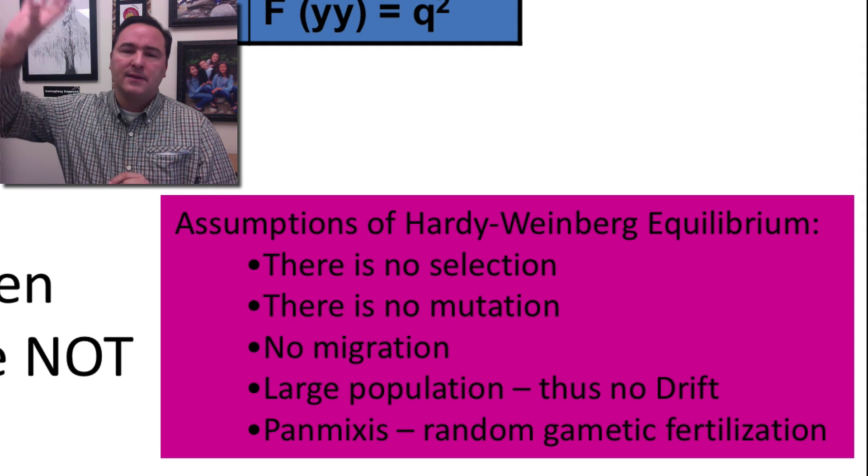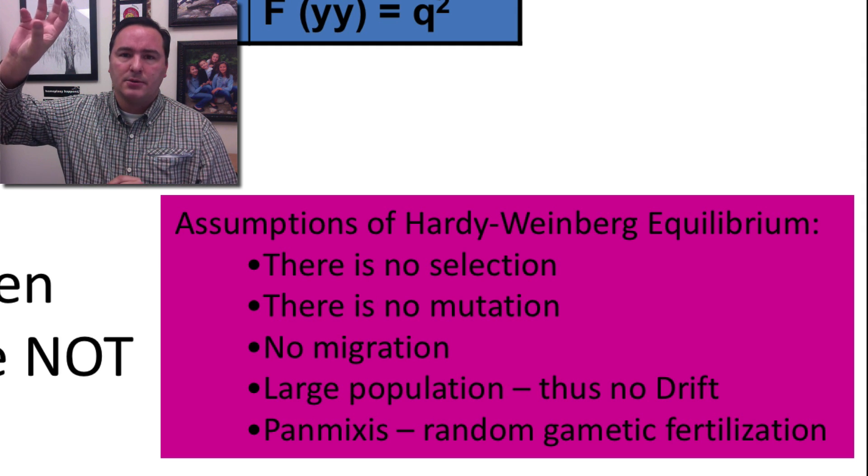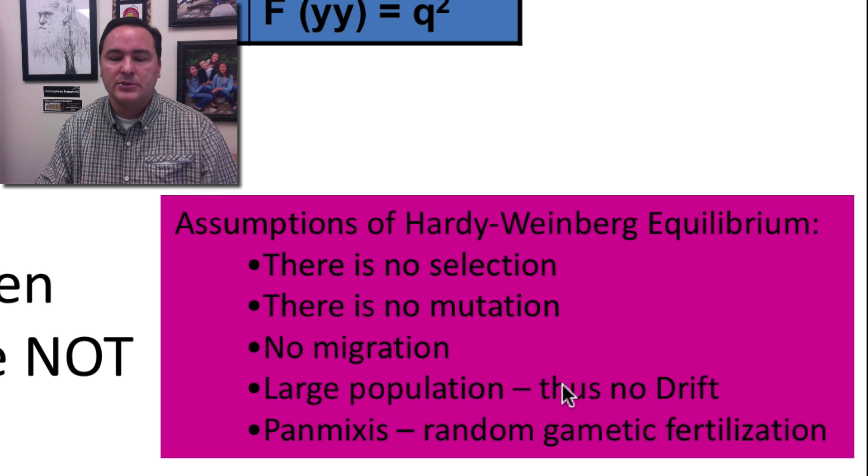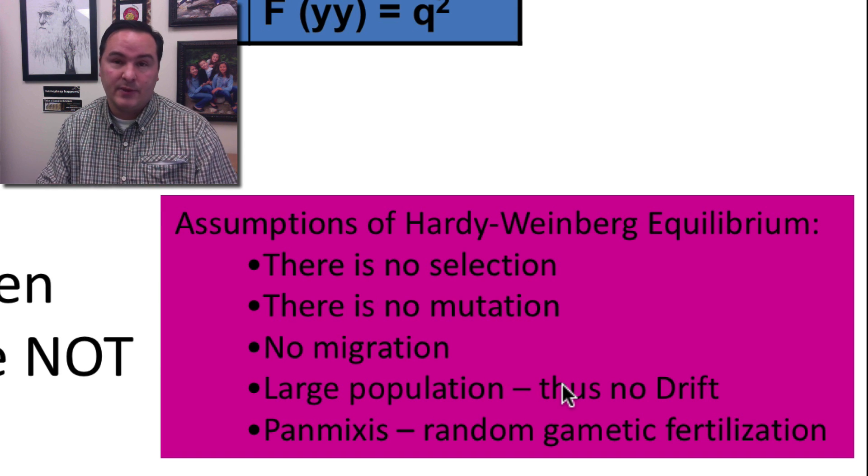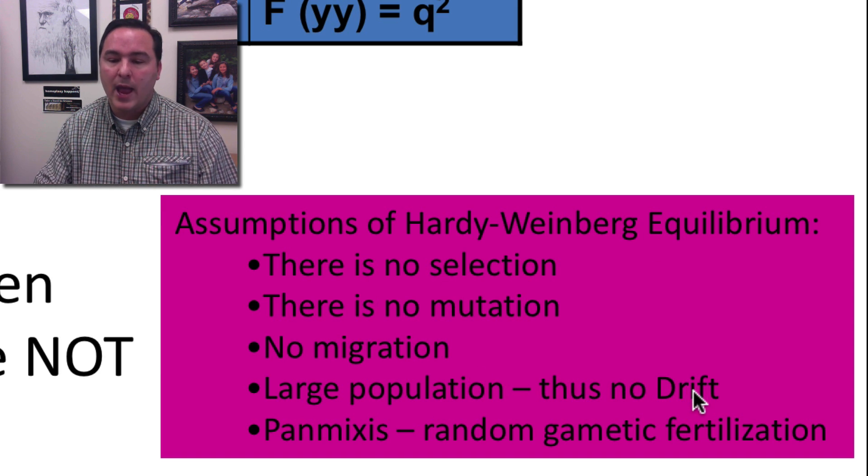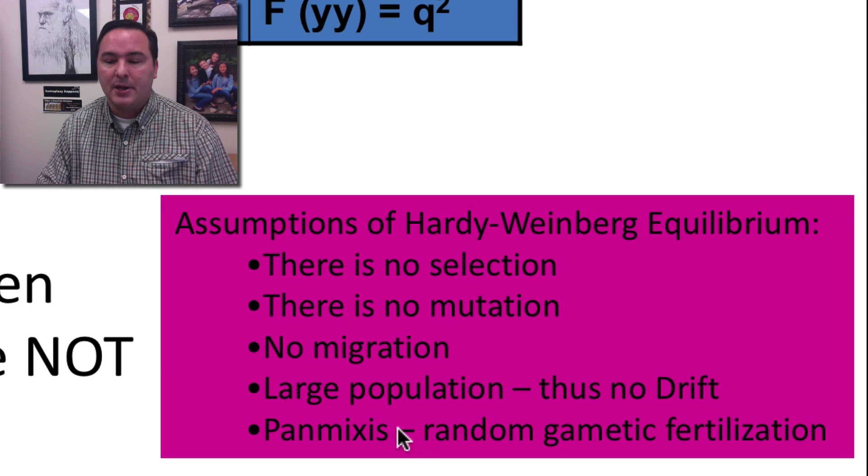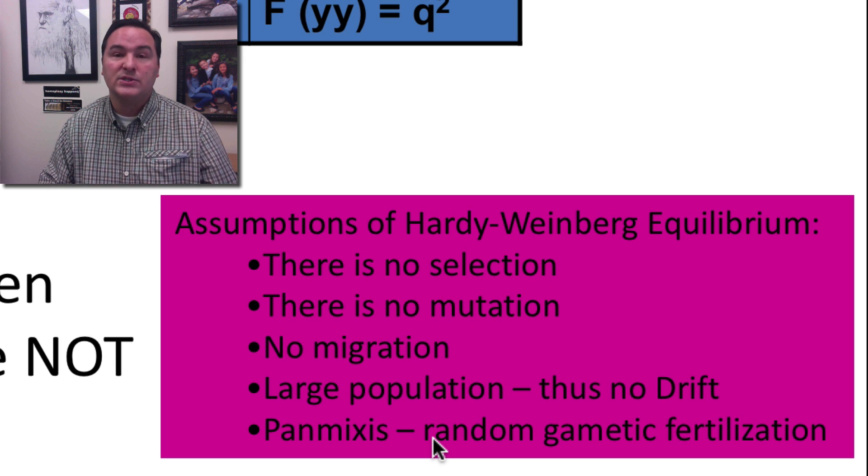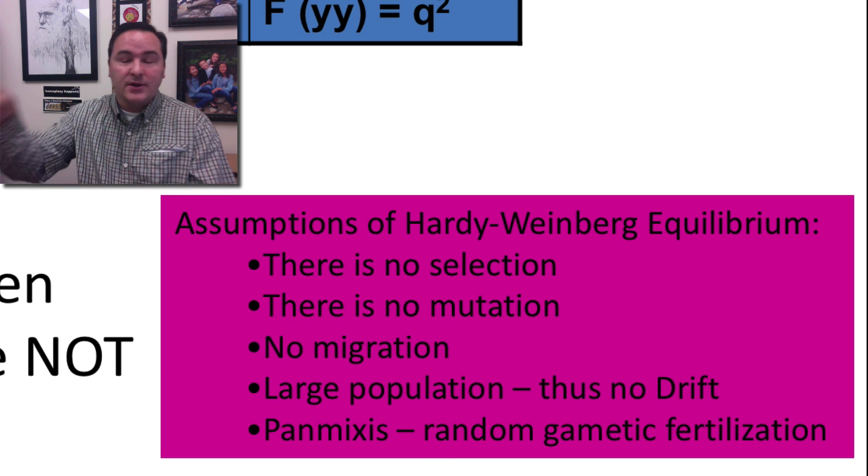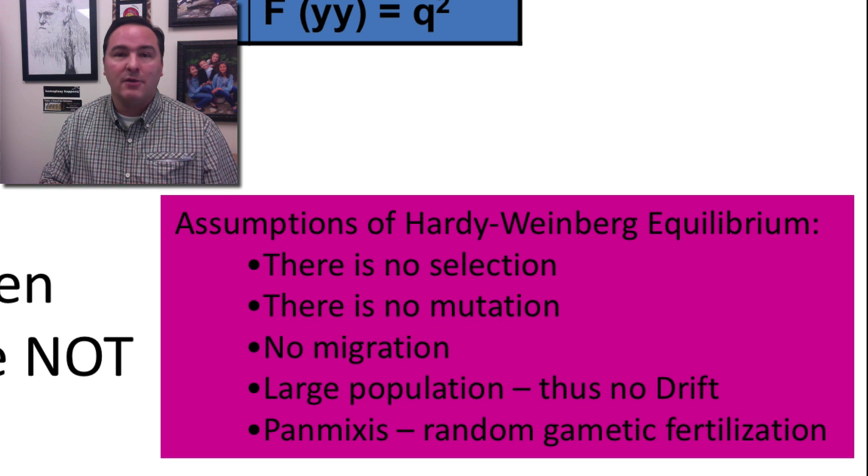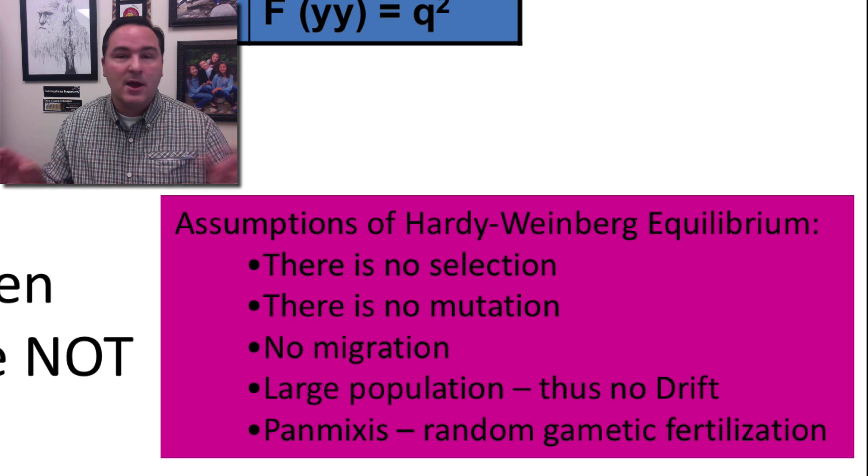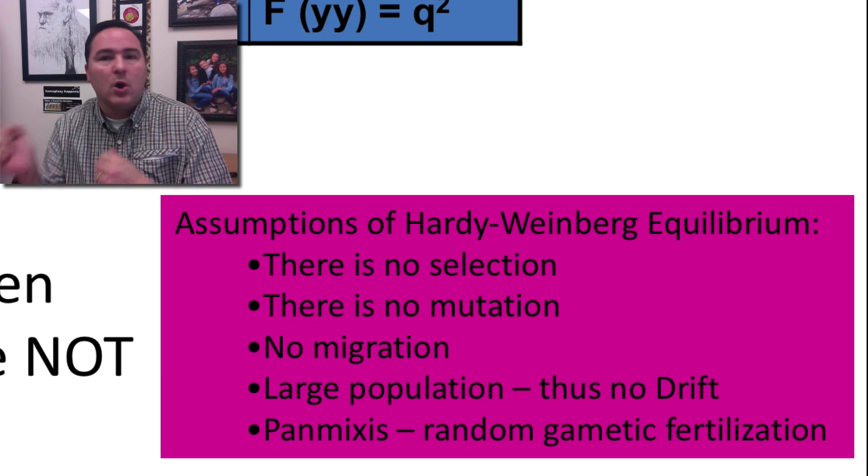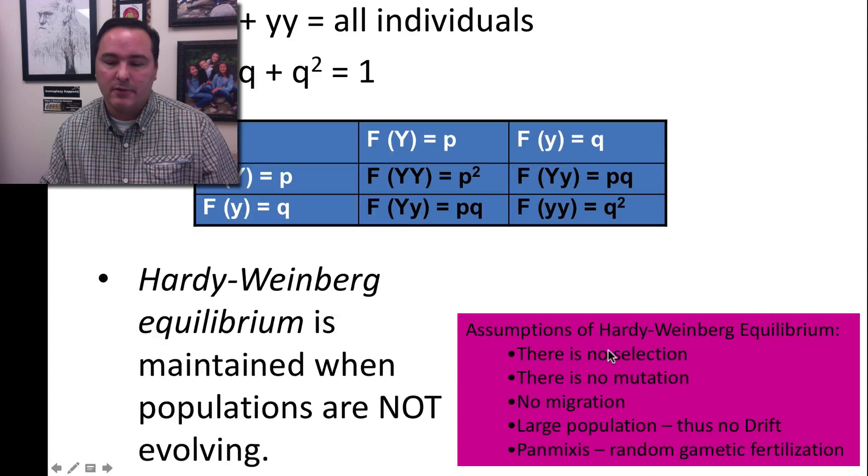We're assuming that there is no migration. In other words, none of the plants in the upper population are reproducing with plants from the lower population. It's only individuals from the same population are reproducing with each other. We're also assuming again this idea of a very large population. So there is no random sampling error that is happening or no genetic drift. And finally we're assuming panmixis which essentially means we're assuming random fertilization events. I mean bees are coming around and collecting pollen but they don't care whether it's from a yellow flower or a white flower or whatever and then they're visiting all flowers randomly and so there's no bias towards yellow flowers only mating with yellow flowers or white flowers only mating with white flowers.